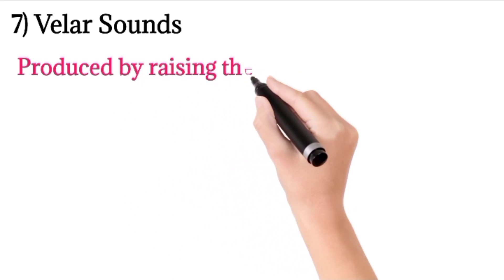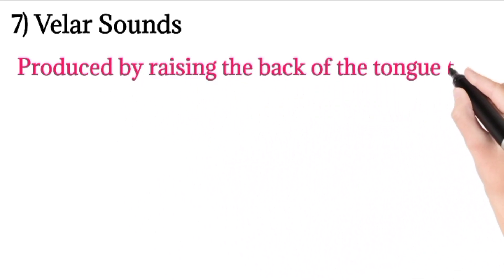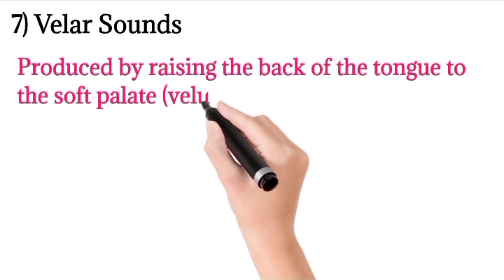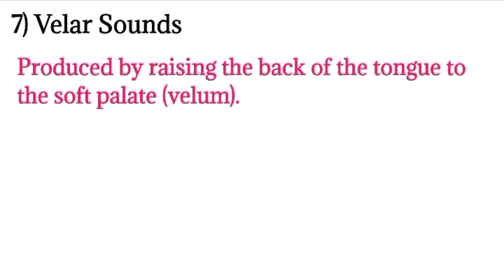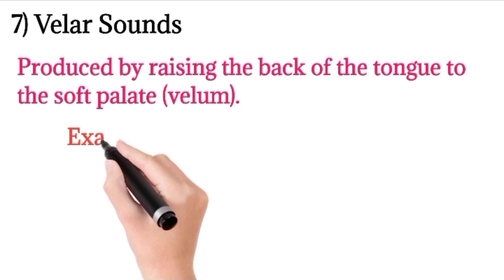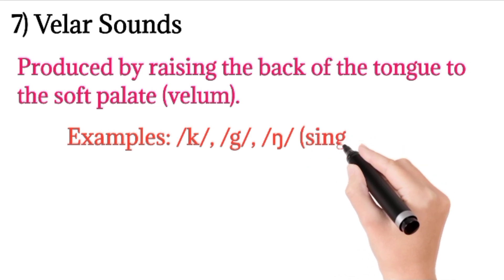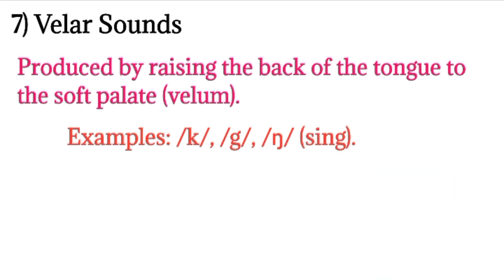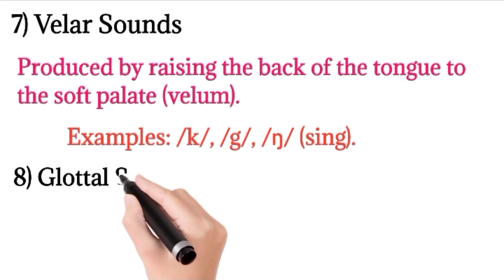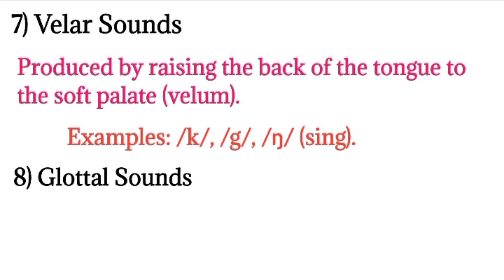The seventh place is velar sounds. Velar sounds are produced by raising the back of the tongue to the soft palate, also known as the velum. Whenever the back of the tongue touches the soft palate or the velum, these are known as velar sounds. Examples include /k/ and /g/, and also the /ŋ/ (ng) sound — as in 'sing' or 'king' — where the ng at the end is a velar sound.